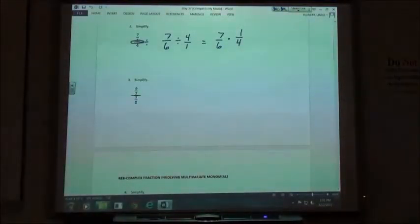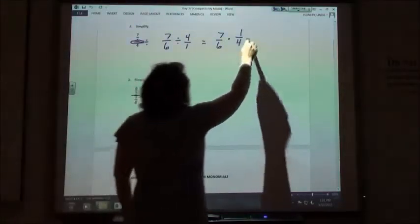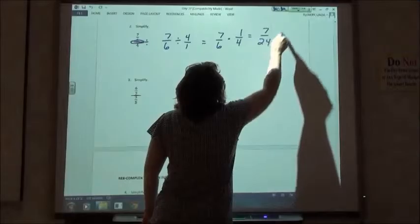That one I can't do any reducing on. I'm just going to multiply, so I'm going to get 7 over 24.